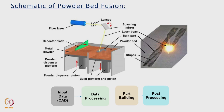Laser powder bed fusion has created a niche for itself in the industrial context because of the maturity of the process and industrialization opportunities. Fundamentally, the process has four distinct sets of operations associated with translation of a CAD data into a metallic part: input data, data processing, the actual build process, and post processing.